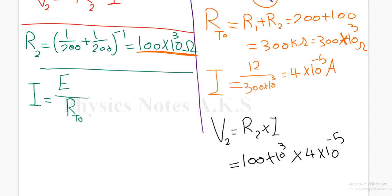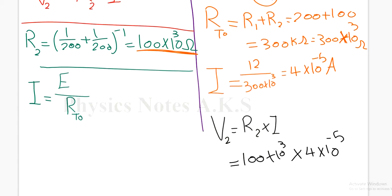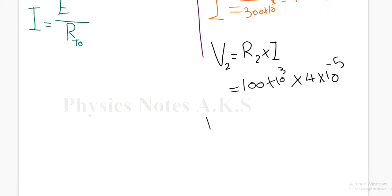So it is R2, we found it 100 multiple 10 to the power 3, multiple I it is 4 multiple 10 to the power negative 5. So I get the V2 which is the potential difference in the parallel combination. It equals to 8, 8 volt.